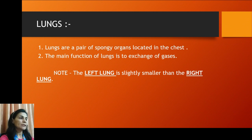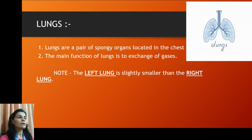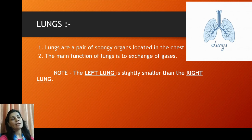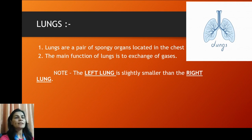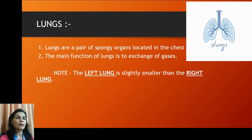The next organ is the lungs. Lungs are a pair of spongy organs located in the chest. The main function of the lungs is the exchange of gases. Note: the left lung is slightly smaller than the right one, so both lungs are not the same size. As you can see in the picture, they appear as two balloon-like or sponge-like structures.